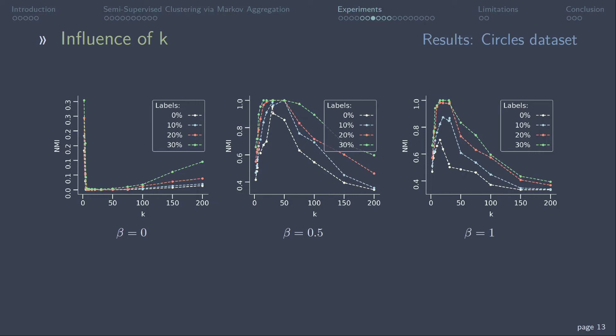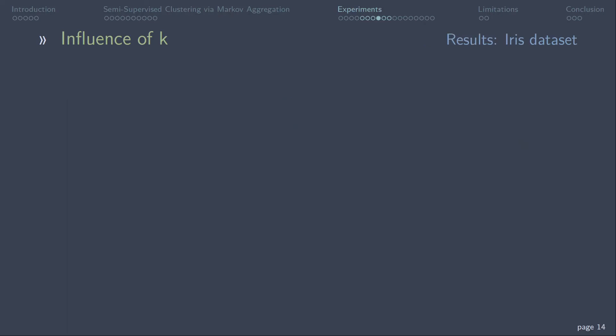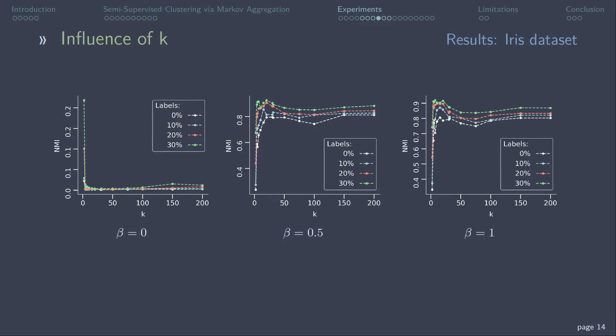The same is repeated for the iris dataset. Here, the NMI shows less variations with respect to changes in k. However, pairwise constraints also lead to an increase in accuracy. For all further experiments, k was fixed as 20. Here, the accuracy for both circles and iris showed a stable performance.